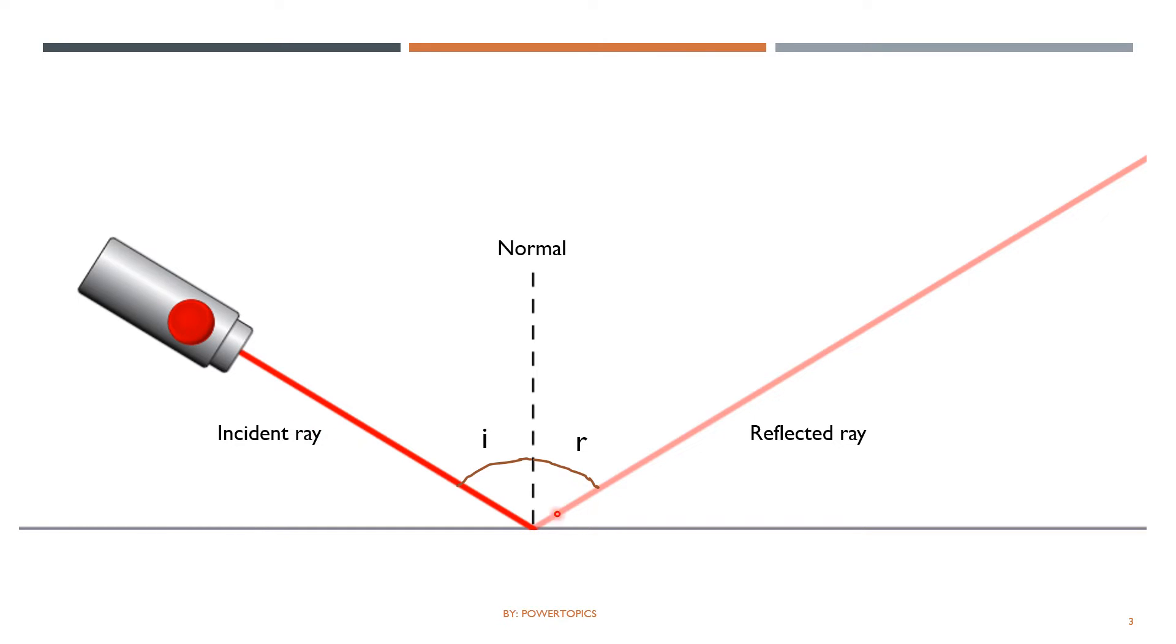Reflection is basically just the bouncing of light. When you're drawing a diagram, make sure that you have your normal line perpendicular to the mirror here and label your incident ray and reflected ray. Make sure your incident angle and the angle of reflection is equal. Also don't forget the arrows.